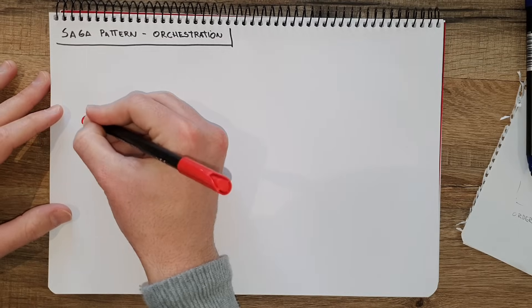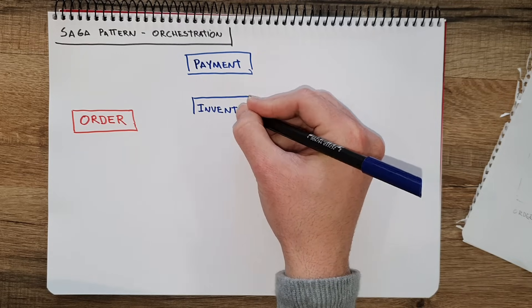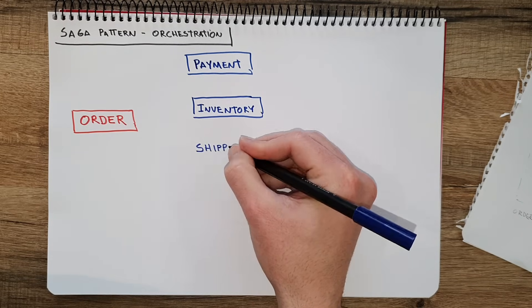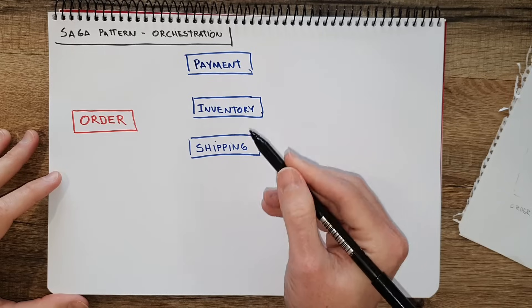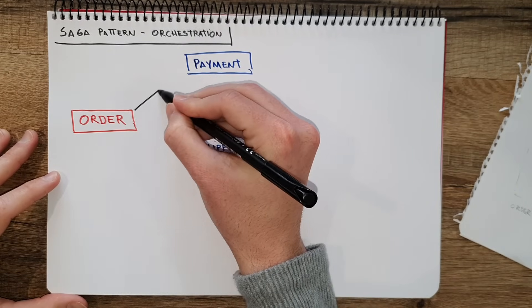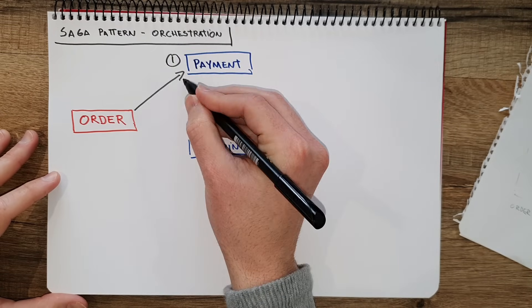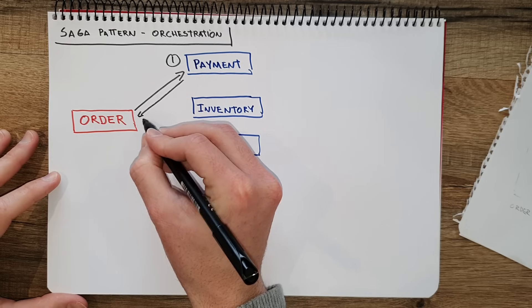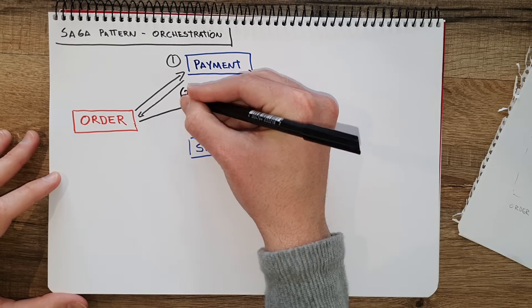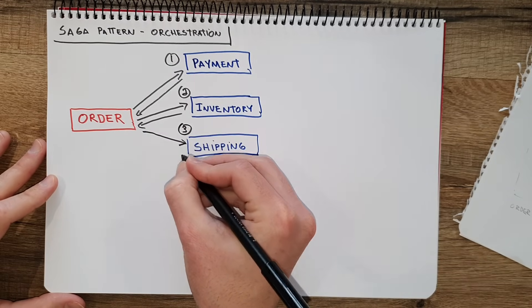In our e-commerce site, we could have, for example, the order service being the orchestrator. The order service is the one that the user calls when they click the buy button. So the user buys a product, calls the order service, and the order service can call the payment, inventory, and shipping services correctly in the right order to make sure that the product is delivered to the user. In this case, the order service calls the payment service, confirms the payment and waits for the response. When it gets a response, it calls inventory to deduct stock, waits again, and then calls shipping to ensure the order is shipped to the right user.